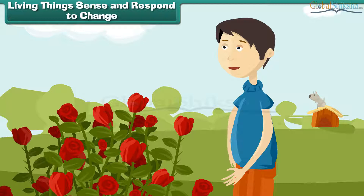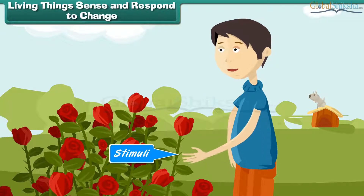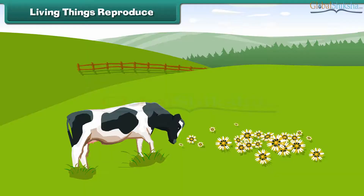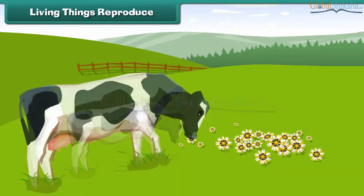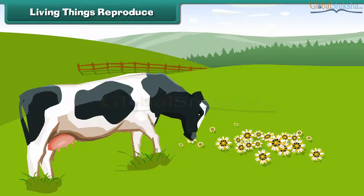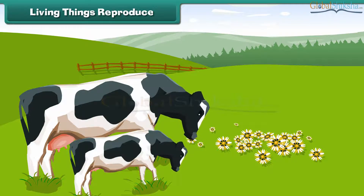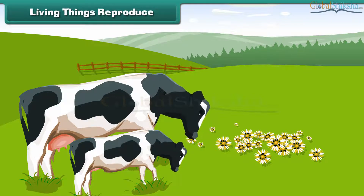Living things sense and respond to change. Consciousness is awareness of the surroundings and responding to external stimuli. The ability of an organism or organ to respond to external stimuli is called sensitivity. Living things reproduce. Young ones grow and become mature; they develop the faculty to produce young ones of their own type. Life comes from pre-existing life.